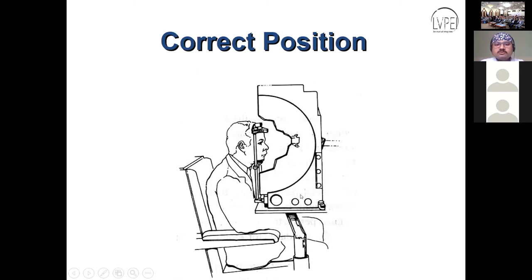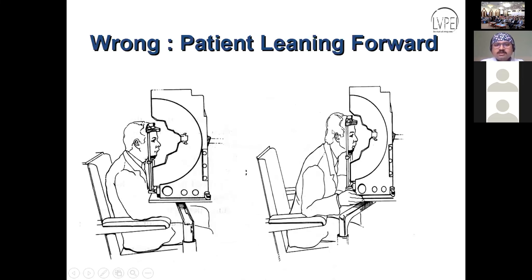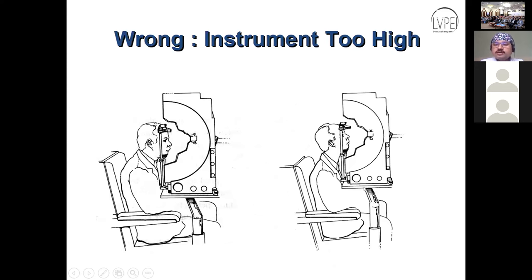Here is a picture showing the correct patient position during the test. When the patient is leaning forward, this is not a correct position — it provides poor ergonomics, makes the patient tiresome, and reduces concentration. Similarly, when the instrument is too high and the chin rest is not supported, this leads to an inferior scotoma. The chin position must be adjusted according to the patient's height.